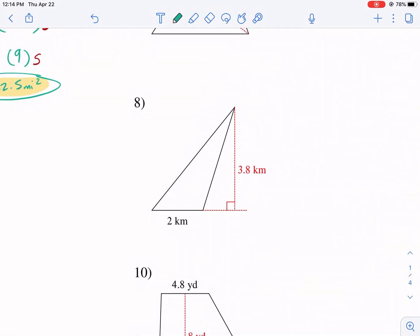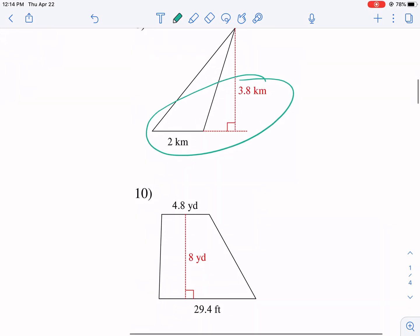Triangle again. Base times the height. Perpendicular. That's important. 3.8 divided by 2. And so on and so on. So we're actually going to get 3.8 kilometers squared for this problem.